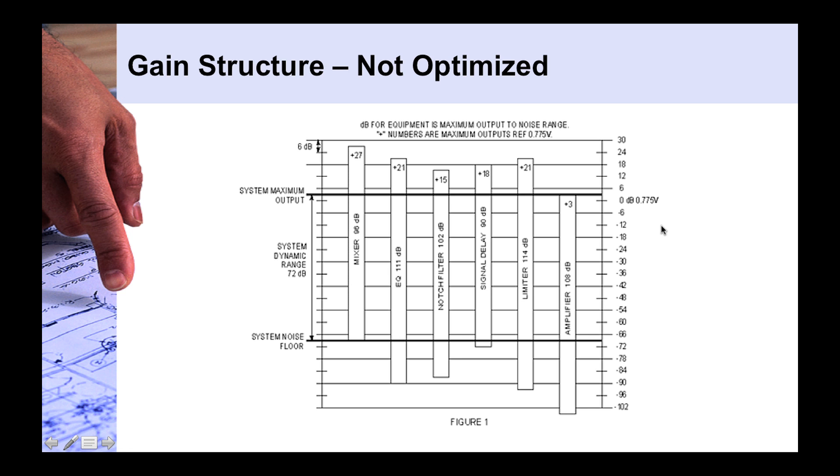And if we don't optimize the signals going from device to device, you'll see this mixer can handle up to plus 27. But if we just leave everything at unity gain going through all the devices here, we have to go with the lowest common denominator. Like this device here can only handle plus 3. So even at our mixer, we're kind of stuck at a ceiling of plus 3 dBU here. So we really can't exceed that without clipping the input of our amplifier here.